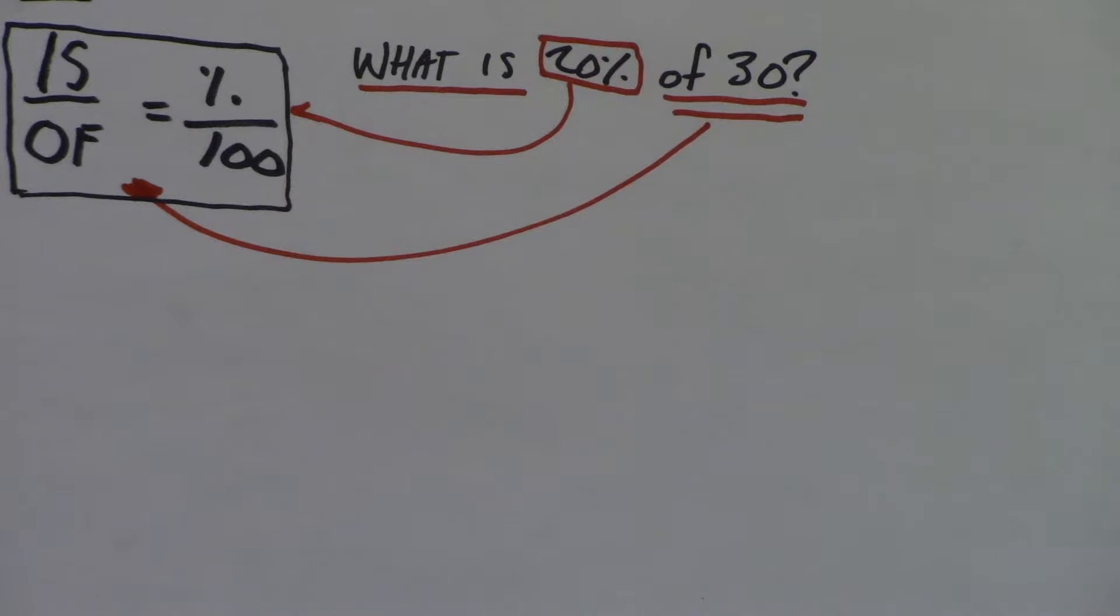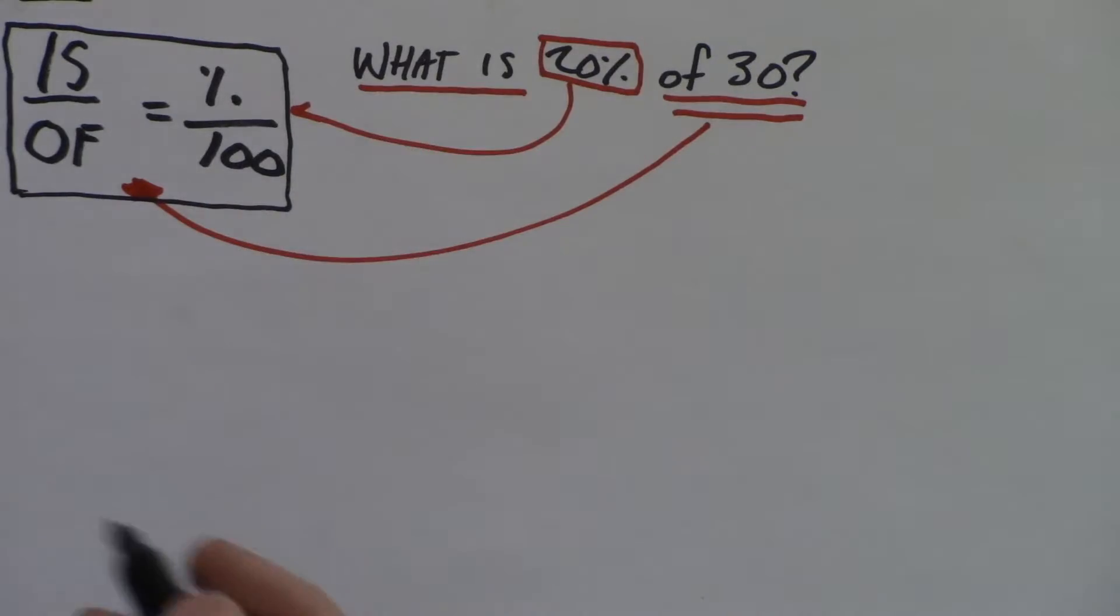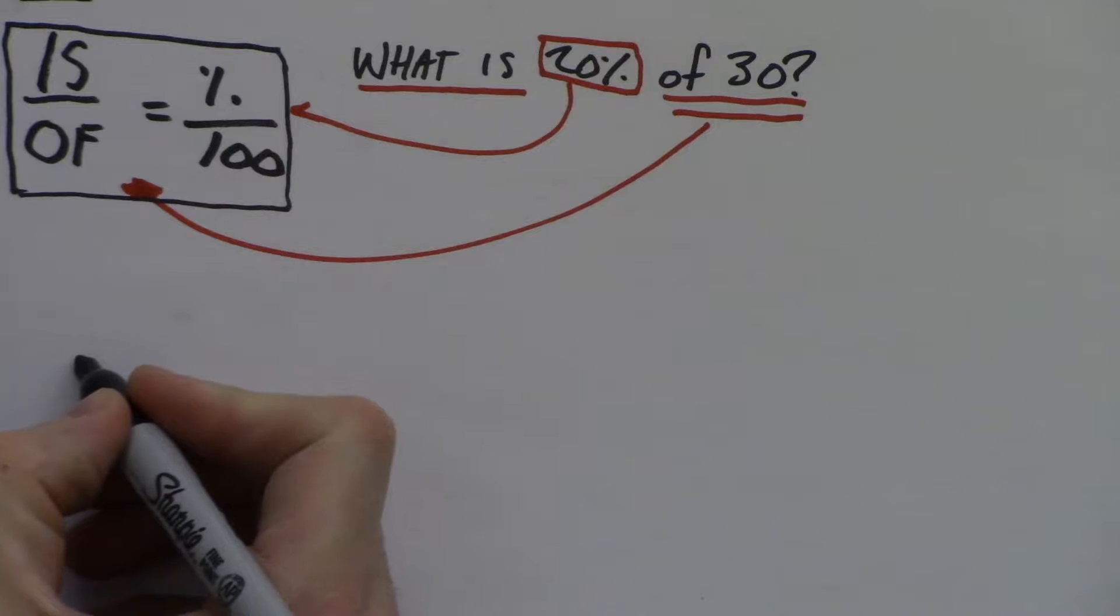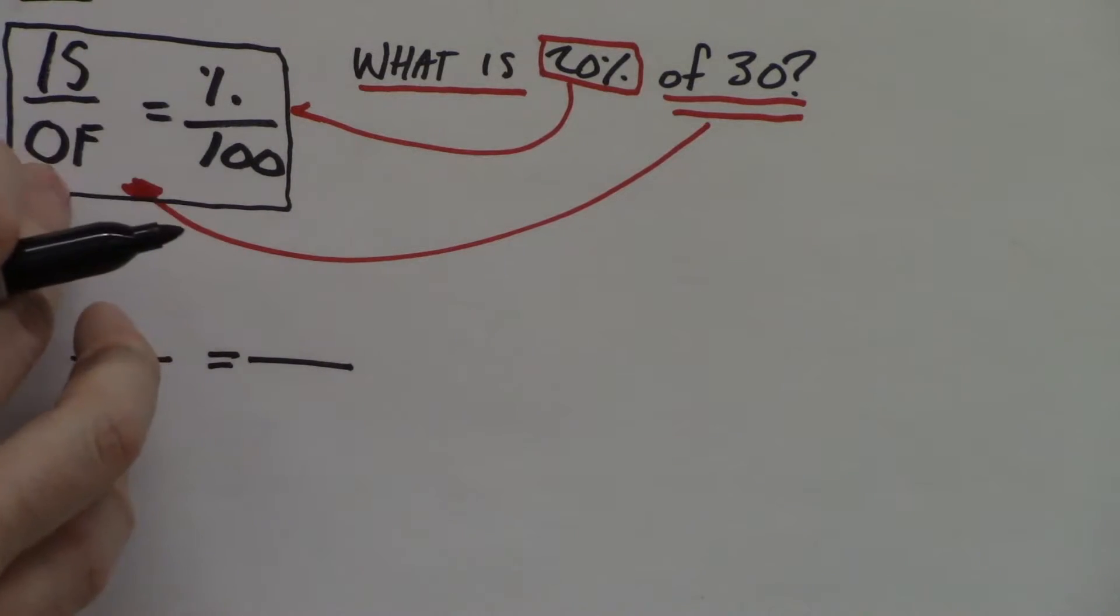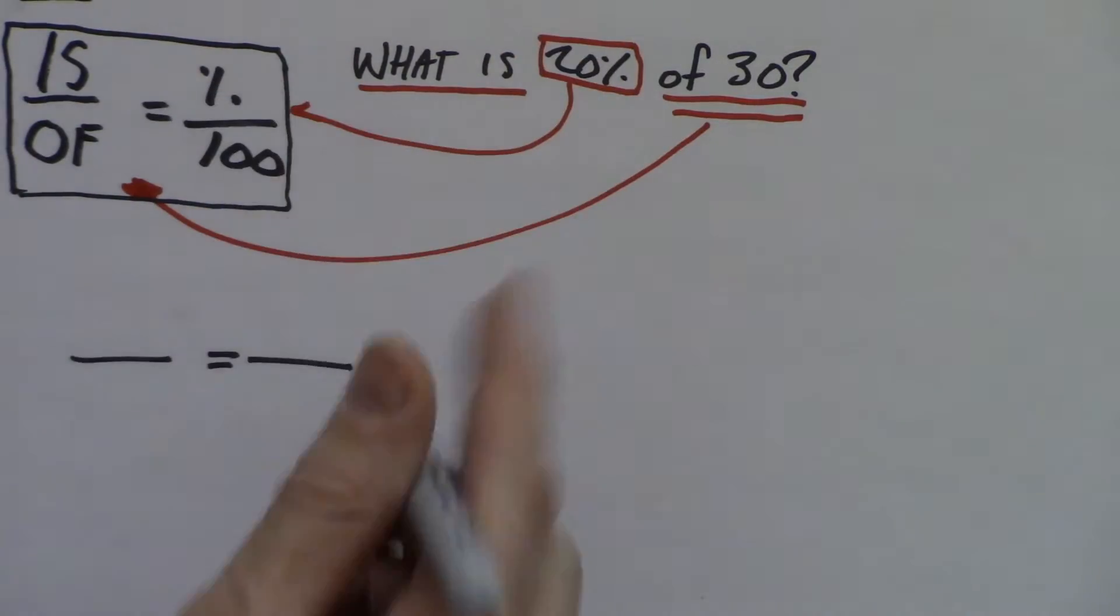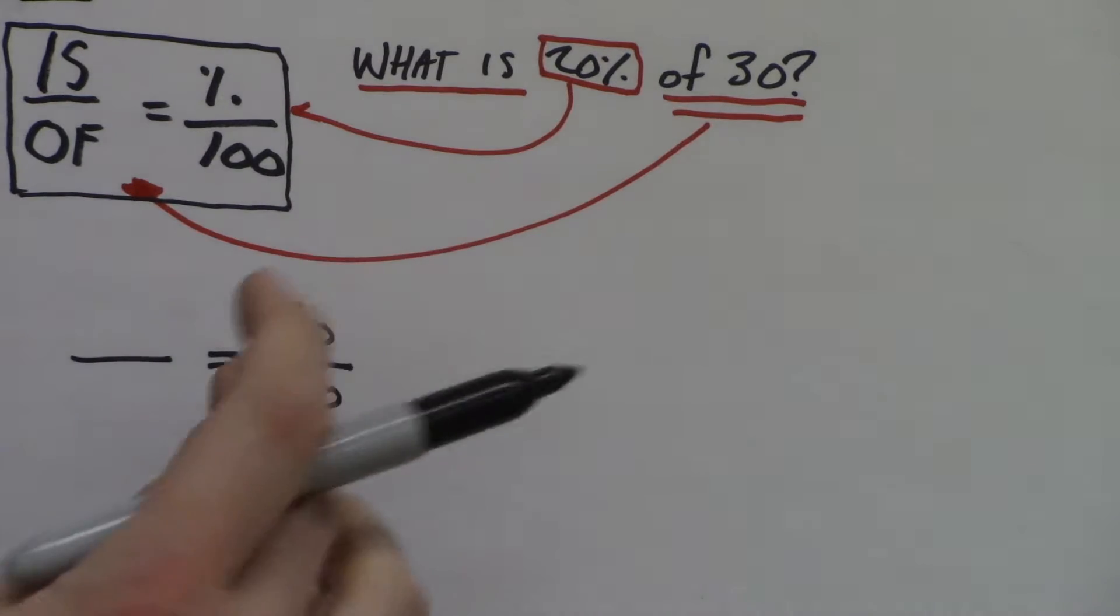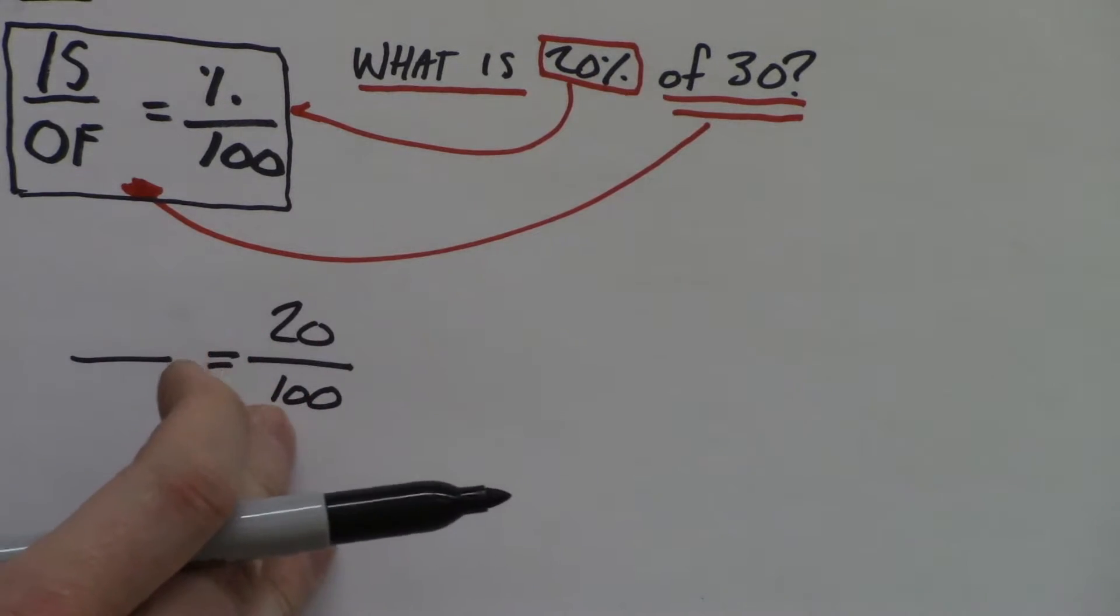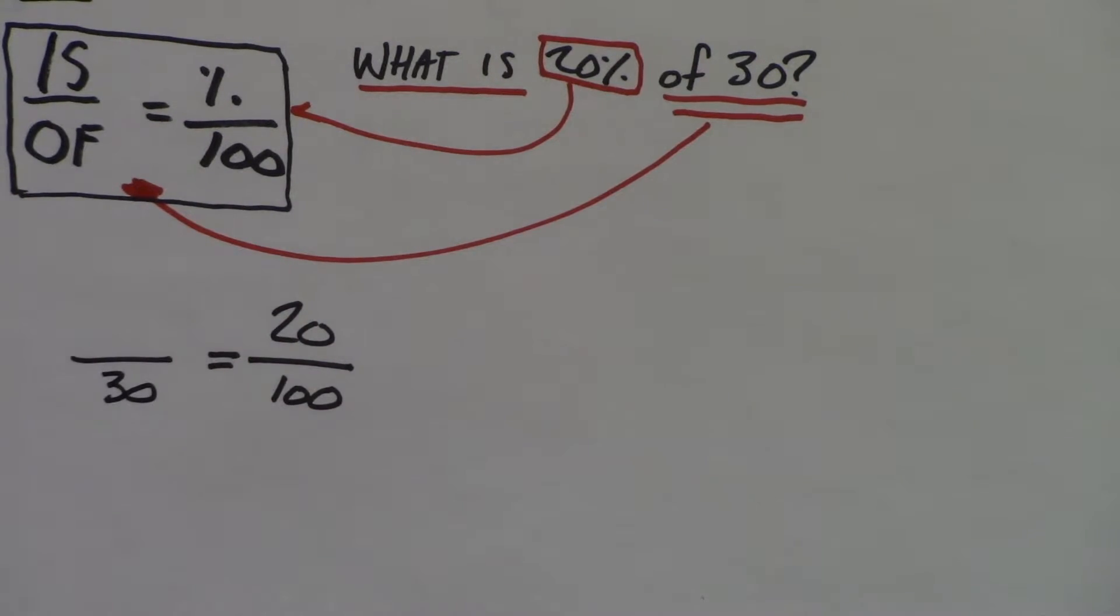That's the first step of cross multiplication: figuring out what goes where. Once we have that, then what we do is plug in these numbers. So cross multiplication starts with a cross multiplication station. I have these two fractions: is over of equals percent over 100. We already know that 20% goes there, so I'm going to stick 20 there. Hundred comes for free because that's what percent means, out of 100.